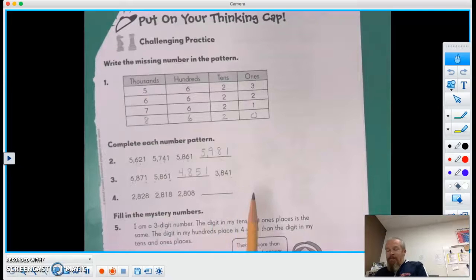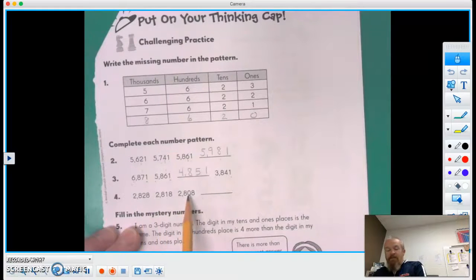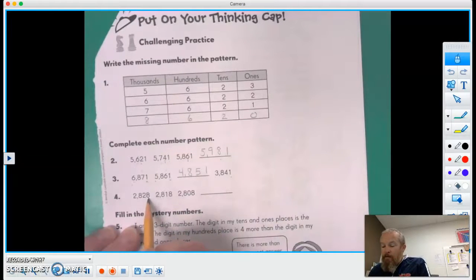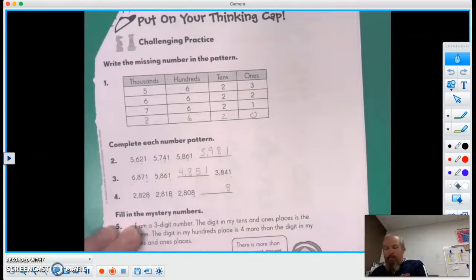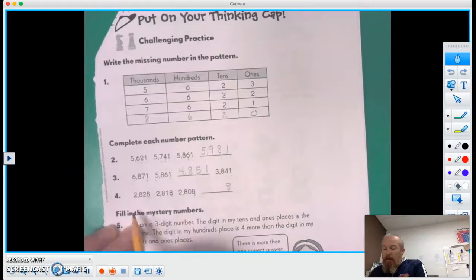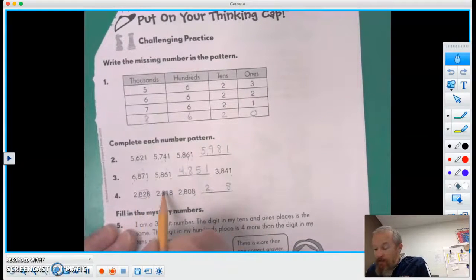Okay, now let's look at this one. So 2828, 2818, 2808. I'm going to look here at the ones column and I think that's going to be a two in the thousands column. And now when I look at just these two numbers...